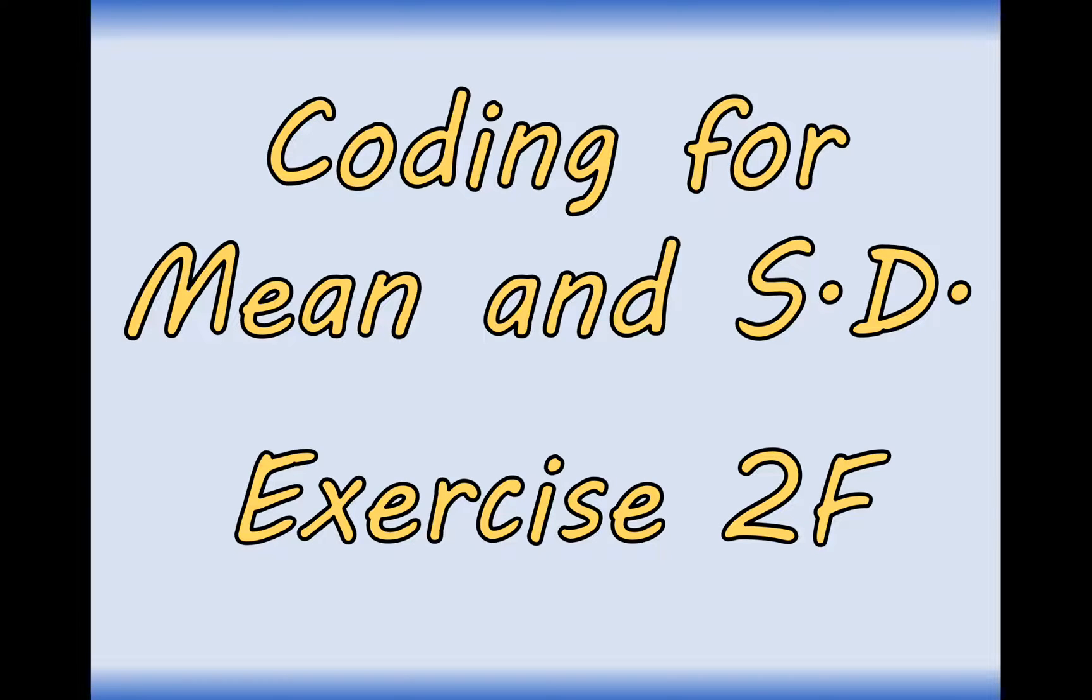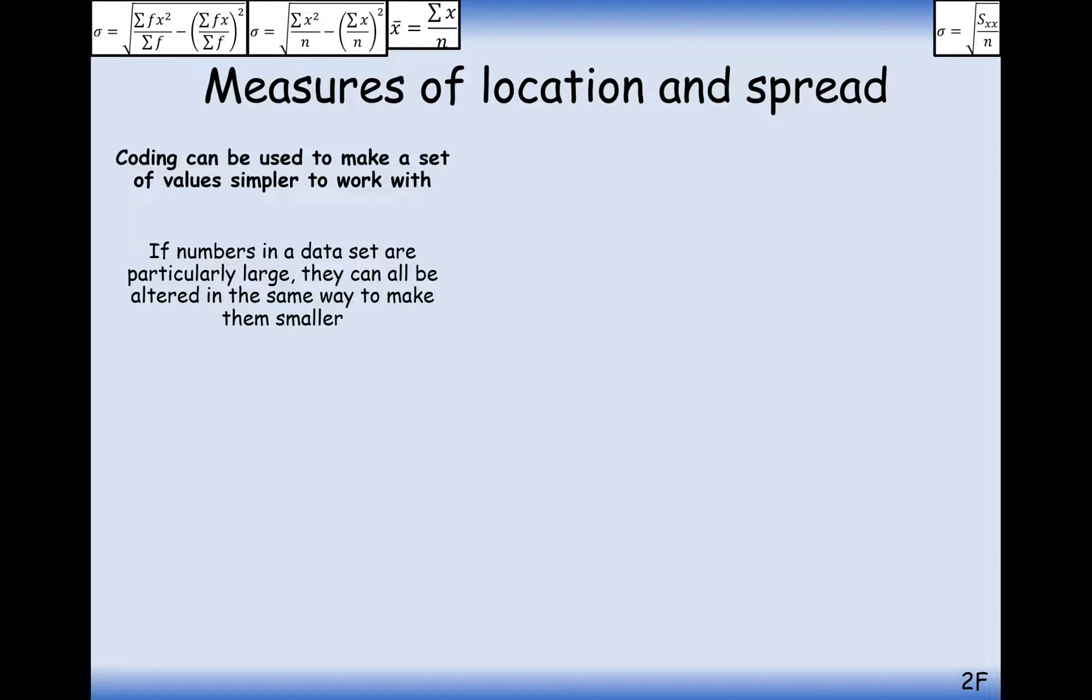Now it says the word coding, it's actually not that particularly interesting. All it is is just making large data values smaller so that we can work out the mean and standard deviation a bit easier, and then we can work our way backwards to work out the mean and standard deviation of the original set of data. So it's just a little process of making the numbers easier, working with those easier numbers and then getting back to our original data set.